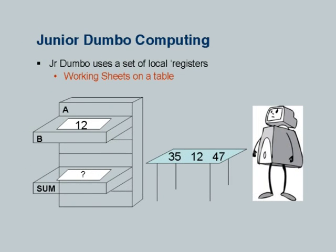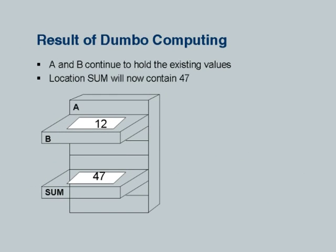This is like a register set on a work table, trying to explain the concept that addition does not happen just like that — there is a lot of work the machine has to do internally. We then emphasize that A and B continue to hold their existing values, but the location 'sum' will now contain 47, which is the new value.